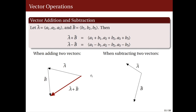For the difference, we place vector b such that its initial point coincides with the initial point of a — note the difference from the sum. We then take negative b, which is the scalar −1 times the vector b, so it points in the opposite direction. Therefore, the resulting vector a − b has its initial point the same as the initial point of negative b and its terminal point the same as the terminal point of a. This method is called the triangle method.